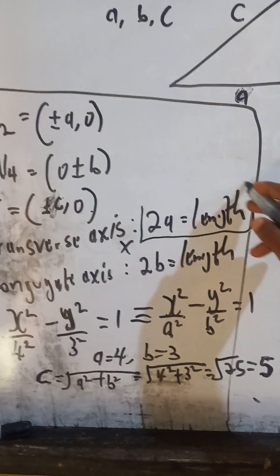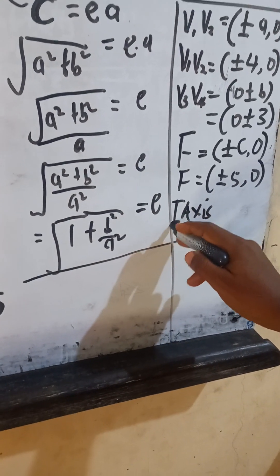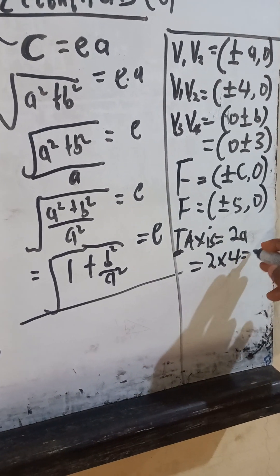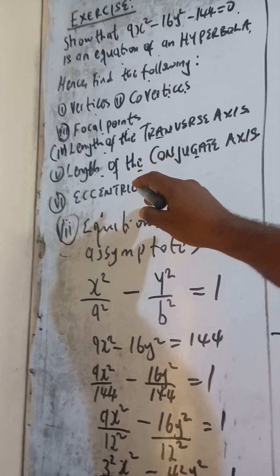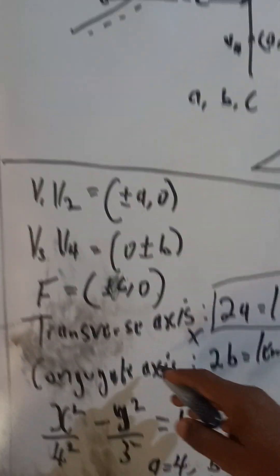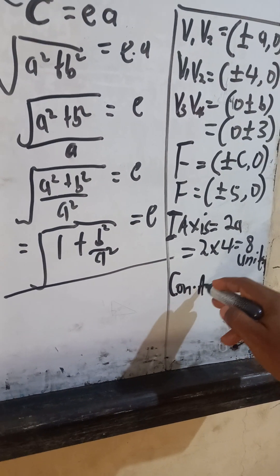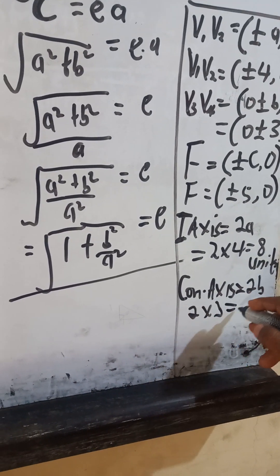To find the length of the transverse axis: the formula is 2A. Since a equals 4, the transverse axis length is 2 times 4 equals 8 units. The next question asks for the length of the conjugate axis. The conjugate axis length is 2B. Since b equals 3, the conjugate axis length is 2 times 3 equals 6 units.